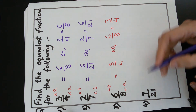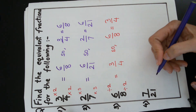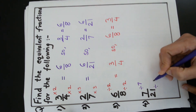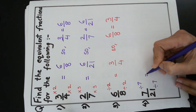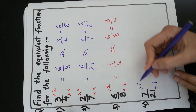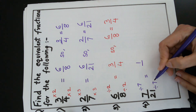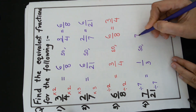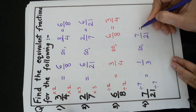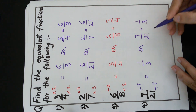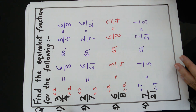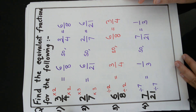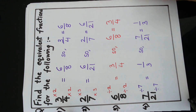Next, we have 7 upon 21. I can divide both by 7. When I divide 7 by 7, I get 1, and when I divide 21 by 7, I get 3. Therefore, 7 upon 21 is equal to 1 upon 3. These are equivalent fractions. So we have seen that in order to find equivalent fractions, we have to either multiply or divide by a number. Thank you.